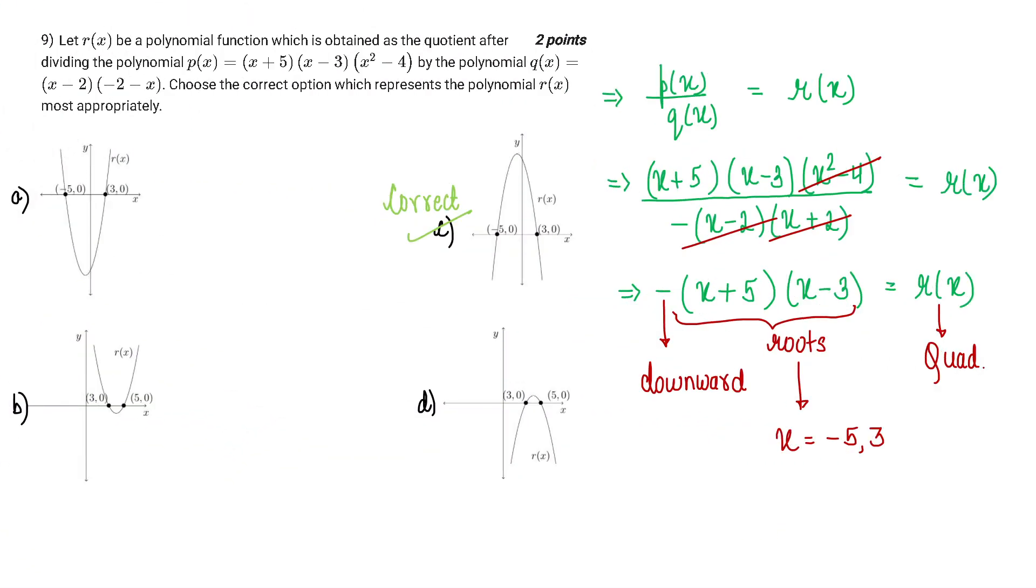Let's move towards ninth question. Let r(x) be a polynomial function which is obtained as a quotient after dividing the polynomial p(x) by the polynomial q(x). So basically this is a division. If we are dividing p(x) by q(x), we will find r(x). Now we need to find the graph of r(x) from these four options.